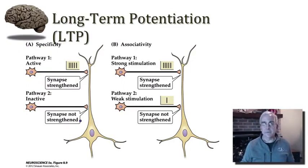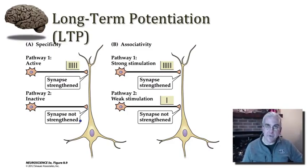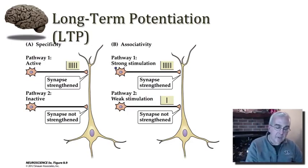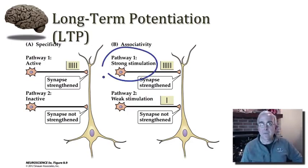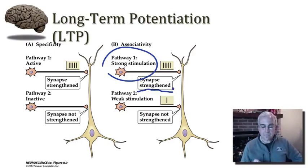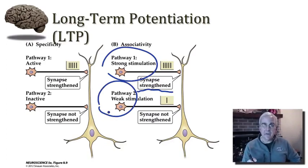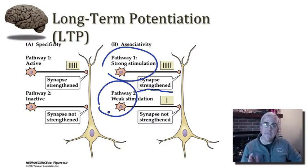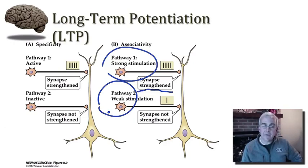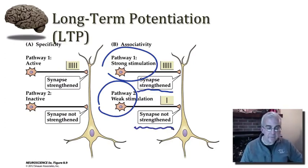Now we have the principle of associativity, and this is extremely important. Imagine we've got two pathways converging upon the same post-synaptic neuron. One pathway is already a strong pathway — that pathway may be stimulated and can strengthen even more. The second pathway is weak; it has only a very modest effect on the post-synaptic neuron. But if the second pathway, the weak one, is activated concurrently with the strong pathway, then the weak pathway can be strengthened. And this is the principle of associativity.